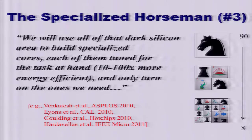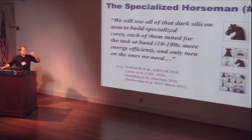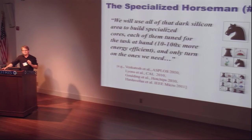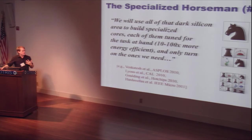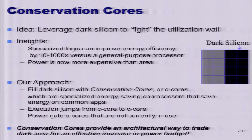The third horseman is what I call the specialized horseman. As we scale down in process generations, we get more and more heterogeneity and diversity in the chip. We'll be building all kinds of little specialized circuits to maximize the energy efficiency of any particular computation at that time. It's well known that specialization can get you between 10 and 100x in energy efficiency. One effort in this area is a project I've been working on called GreenDroid.